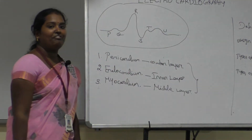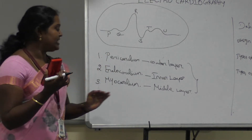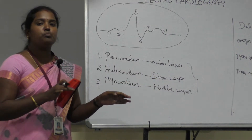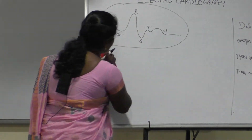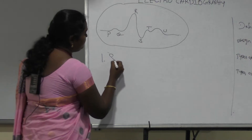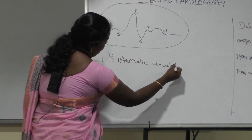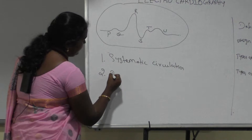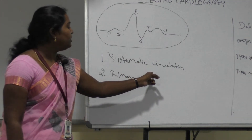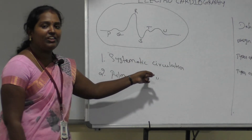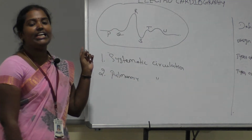The main uses of these layers: the outer layer (pericardium) is used to prevent the heart from friction. The inner layer (endocardium) provides a smooth surface for blood flow function. The heart also has two types of circulation: systemic circulation and pulmonary circulation. Normally, blood is pumped to the lungs through pulmonary circulation, and blood pumped to the different parts of the body is called systemic circulation.